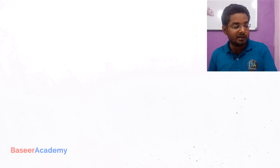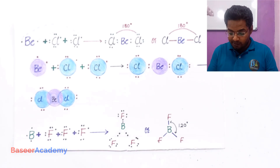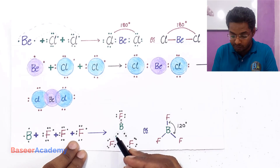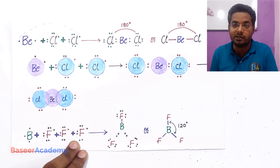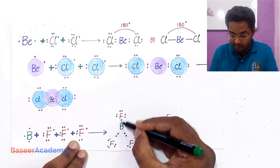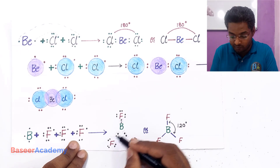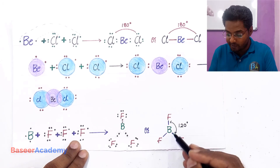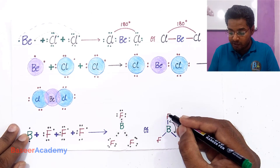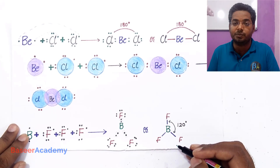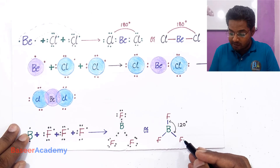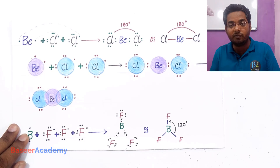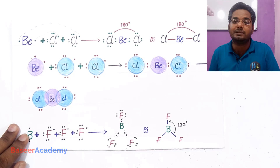Before understanding the term bond angle, let us understand the term central atom. In this diagram, boron is connected to three fluorine atoms through single covalent bonds. The central atom is the atom to which all the other atoms are connected through covalent bonds. Since all three fluorine atoms are connected to boron through covalent bonds, boron is the central atom here.